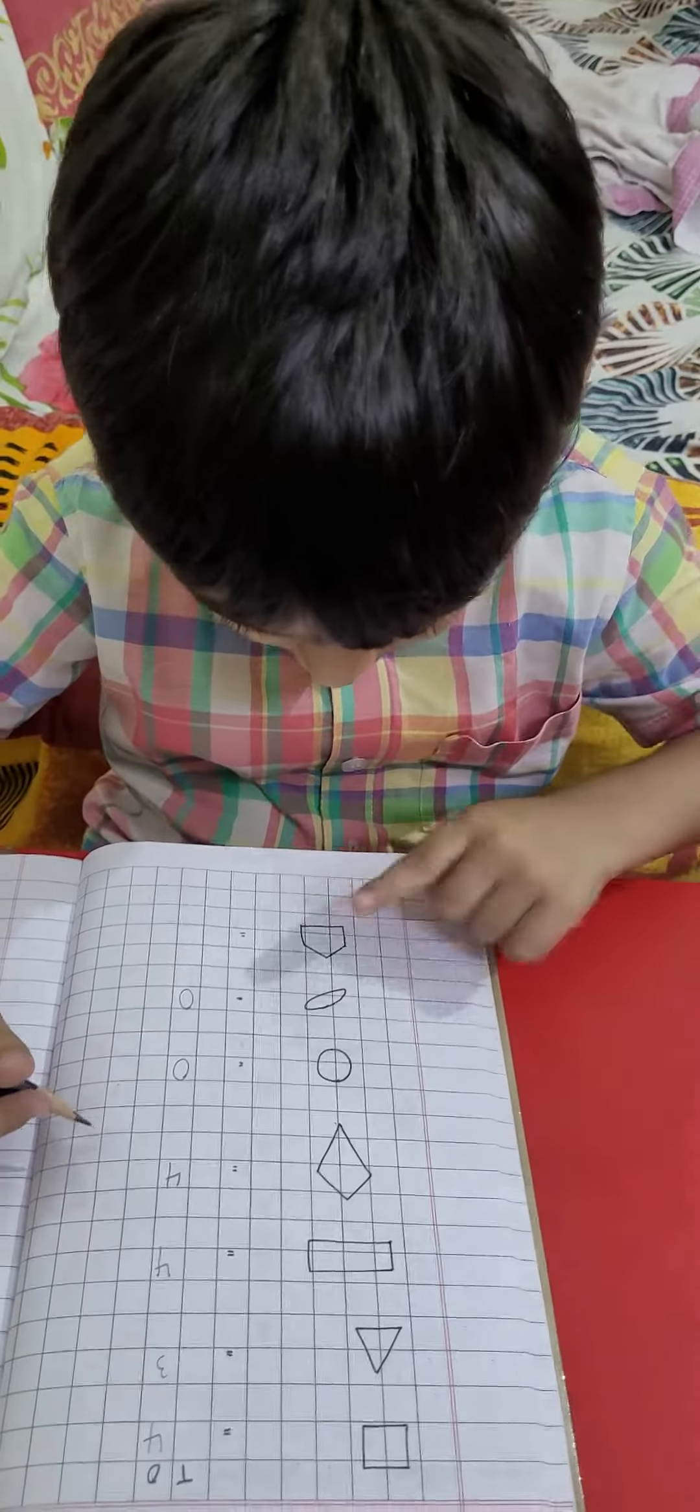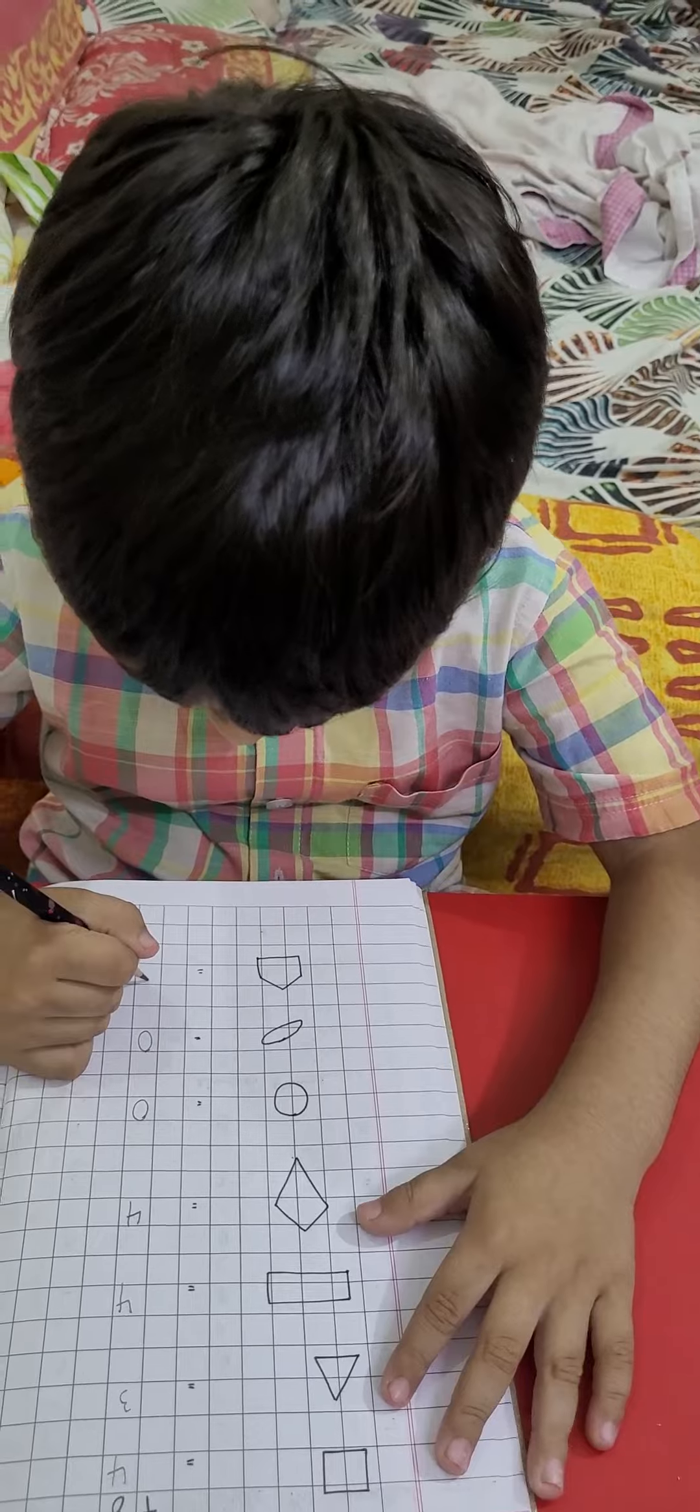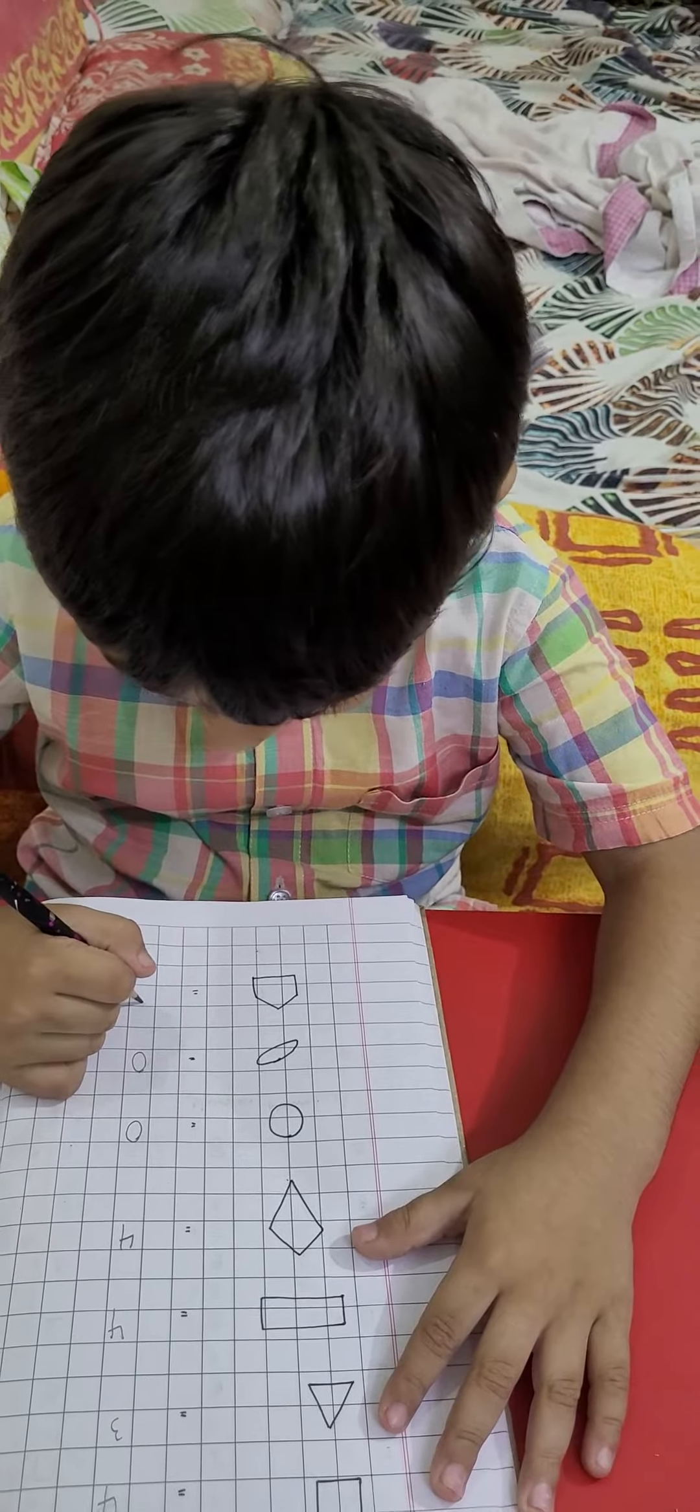Now count how many sides are there. 1, 2, 3, 4, 5. Very good. Which shape is this? Five.